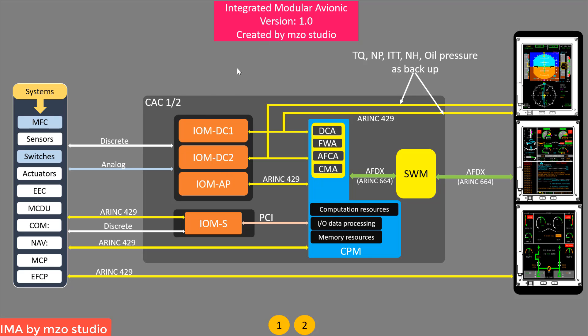The IMA is mainly composed of the CAC1 and the CAC2 — that is the Core Avionics Cabinets. Each cabinet is composed of the IOM module, the CPN, and the SWM — the switching module. The CPN is the core processing module.